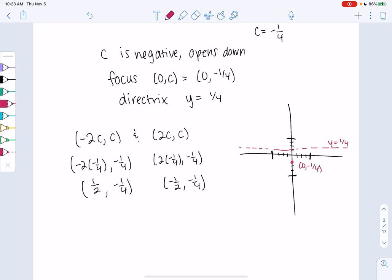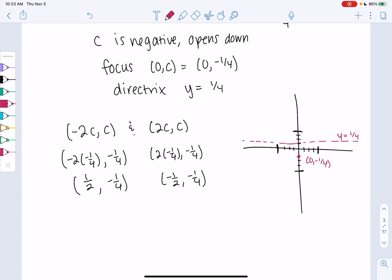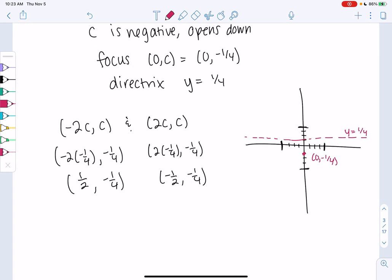And then we know the vertex is at (0,0). And then we go through (-1 half, -1 fourth). And we go through (1 half, 1 fourth). Notice those make that focal chord through the focus. And that's my curve.